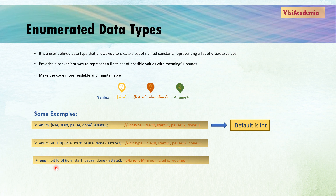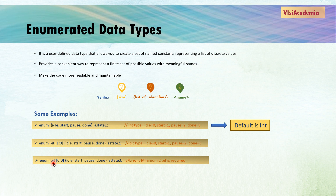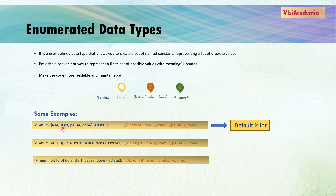If you don't define any size when using bit, it will not automatically determine size based on the number of identifiers. The reason is that 'bit' has a default width of one bit. Similarly, if you use 'logic' instead of 'bit', the same issue occurs since logic is also one bit wide. In our first example there was no such error because int is a 32-bit data type, and here we only need a minimum of two bits.